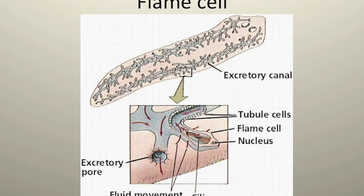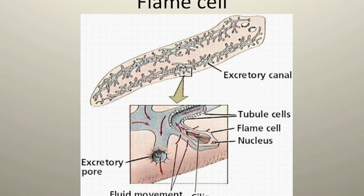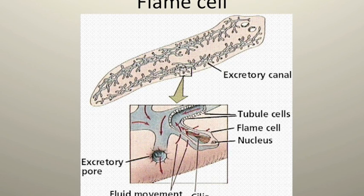Respiratory gases, oxygen and carbon dioxide, are exchanged by diffusion through the body wall.